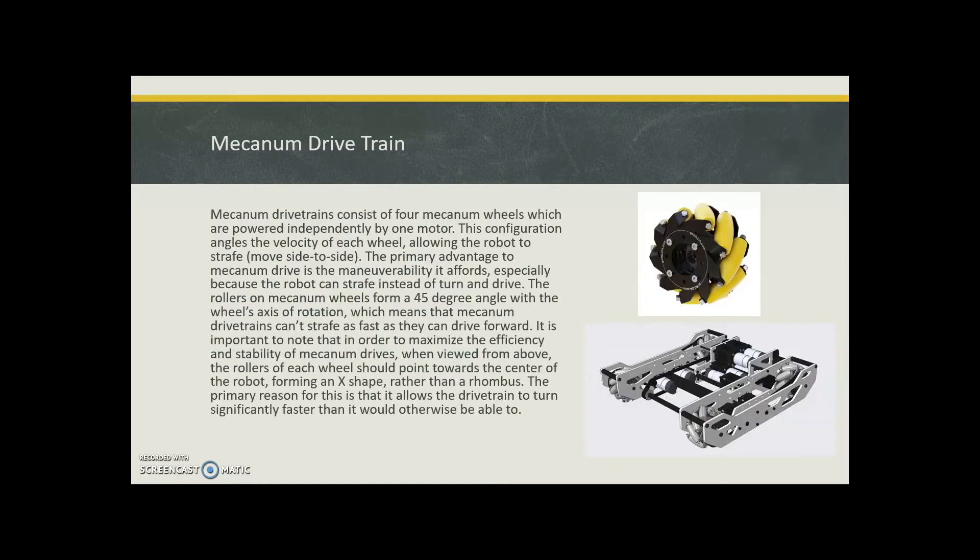Mecanum drive train is a drive train consisting of four mecanum wheels which are powered independently by one motor. The configuration angles the velocity of each wheel allowing the robot to strafe, or move side to side. The primary advantage to mecanum drive trains is the maneuverability because the robot can strafe instead of having to turn and then drive.